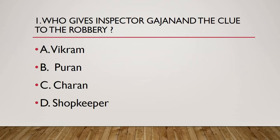Question 1: Who gives Inspector Gajanan the clue to the robbery? Gajanan, Inspector, robbery — these are all from chapter four, 'How Gajanan Caught the Robbers.' The options are Vikram, Puran, Charan, or Shopkeeper. Who gave the clue to Inspector Gajanan? Charan, the house owner, called Gajanan. But who gives the clue? The answer is Puran.